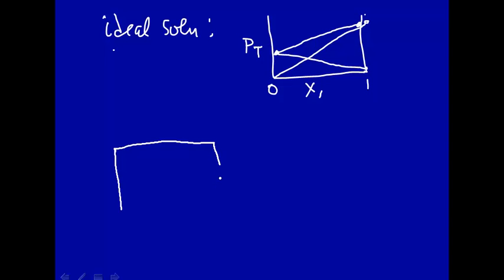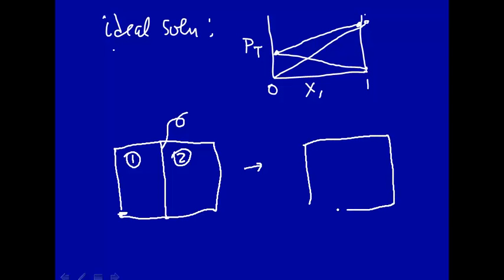Let's consider our system as just two compartments separated by a partition. This is component 1 and this is component 2. Then you remove this partition so that we now have a mixture of component 1 and 2, all mixed together.